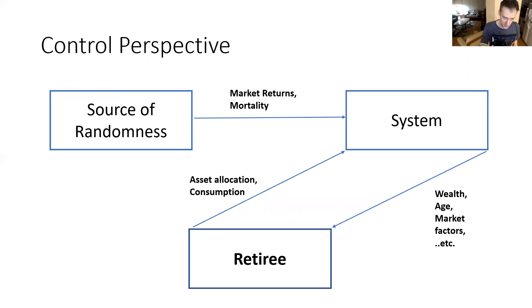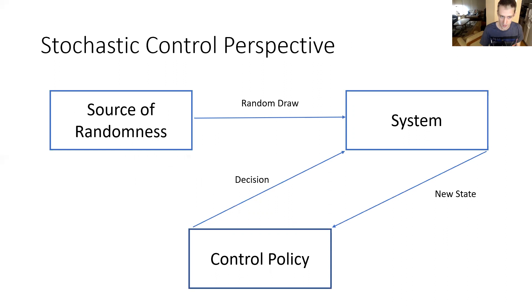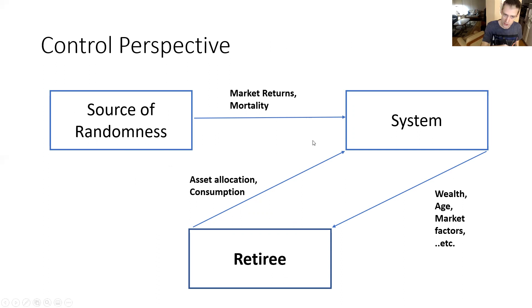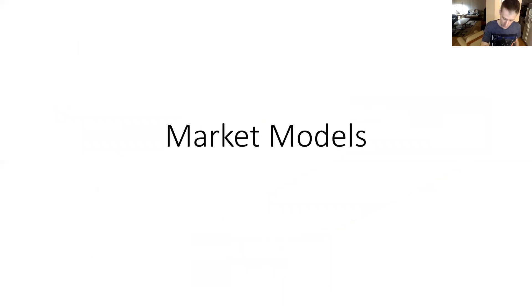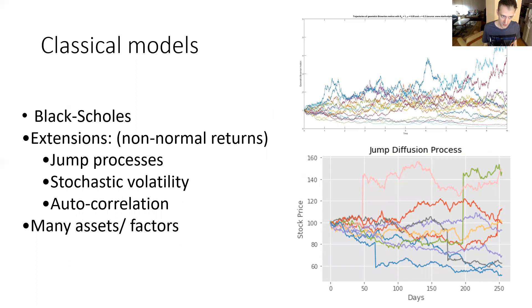Returning to our stochastic control view, we need to consider the source of randomness — in particular, how to generate random market returns. I distinguish two classes of market model: classical models and non-classical models.